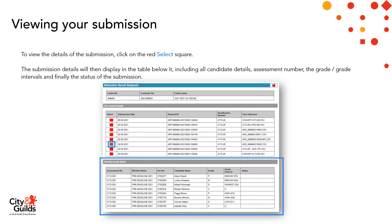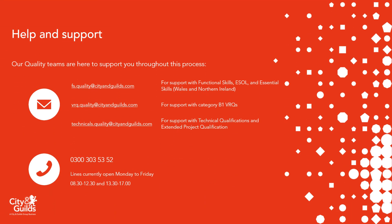This is the end of the process, and I hope it's been helpful for you. We understand that you might need some help or advice, so please do get in contact with the quality teams who are available to support you. There's a team for Functional Skills, ESOL and Essential Skills Wales and Northern Ireland, available at fs.quality@cityandguilds.com. For support with Category B1 VRQs, contact vrq.quality@cityandguilds.com. For support with technical qualifications and the extended project qualification, get in touch with technicals.quality@cityandguilds.com. All teams are available on the same phone line: 0300 303 5352. Please do get in touch if you need any help — thanks for listening, take care, and goodbye.